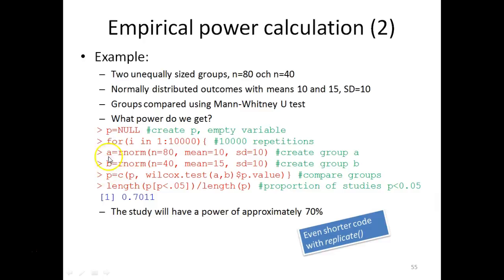And since this is part of a loop, this will happen 10,000 times. And you will, in the end, end up with a p containing 10,000 p-values, one for each run of this simulated study.